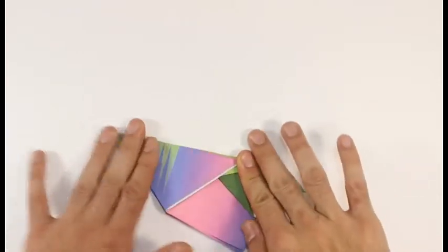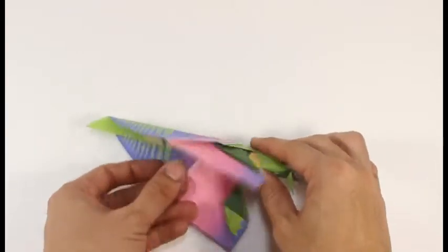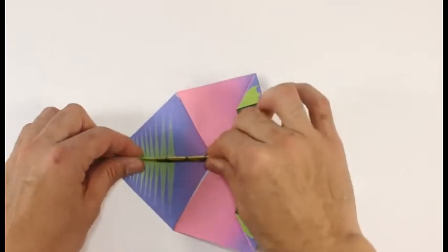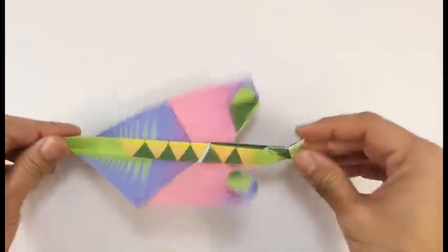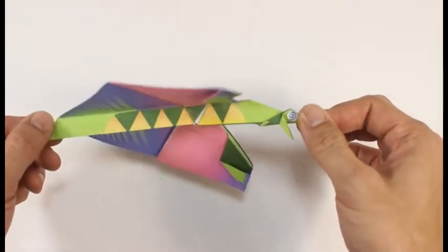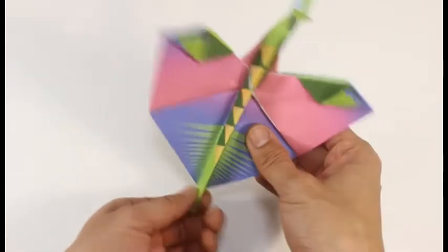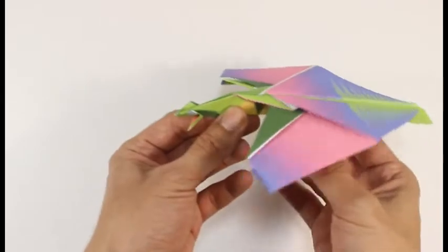If you throw this dragon straight up, it should boomerang back to you. Notice how the wings are angled slightly downward. The swoop dragon is ready to swoop.